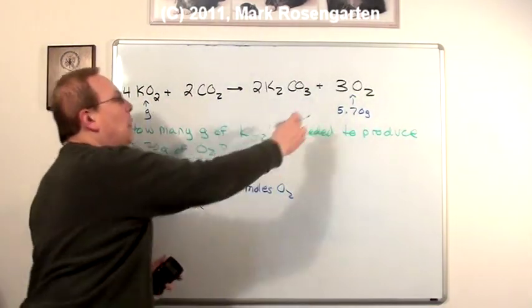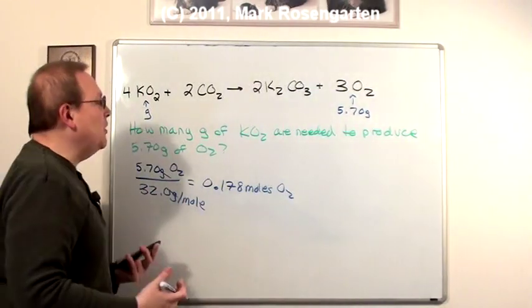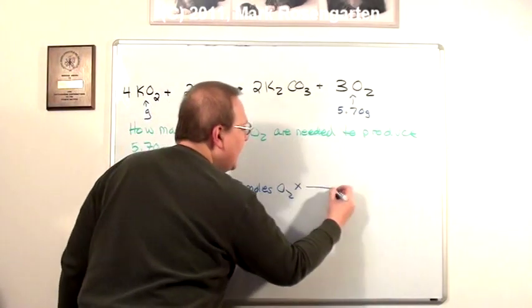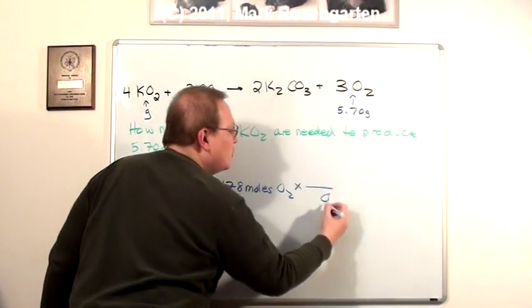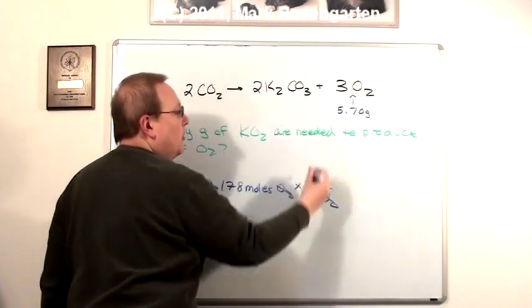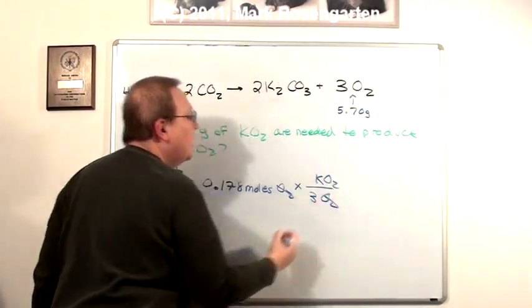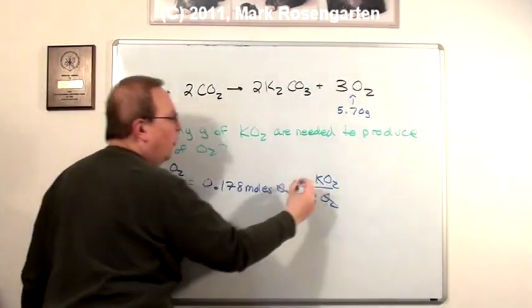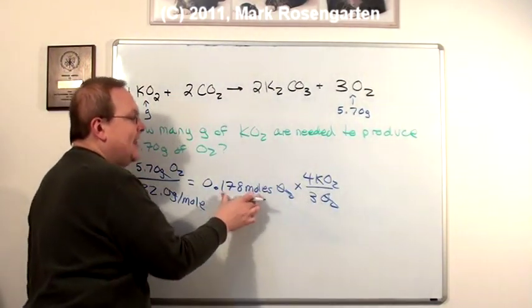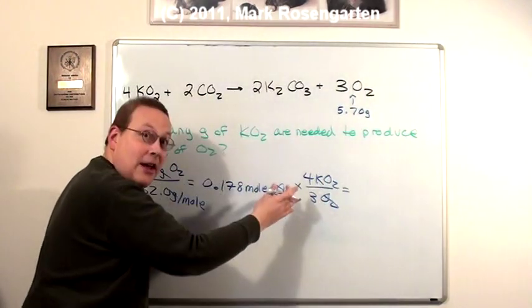Now we can use our coefficients and the ratio between them to figure out how many moles of K2O2 we're going to need. So we multiply by that ratio, putting oxygen on the bottom so that it simplifies, and its coefficient of 3. We put the K2O2 on top, K2O2, and its coefficient of 4. Now, once we multiply this by 4 over 3, that will give us moles of K2O2.